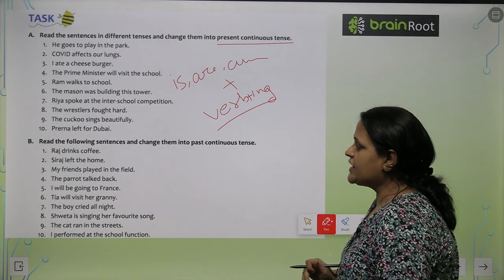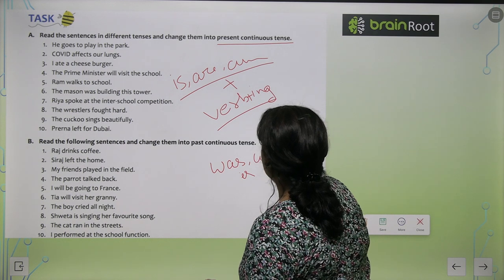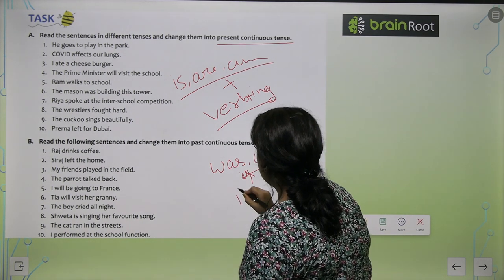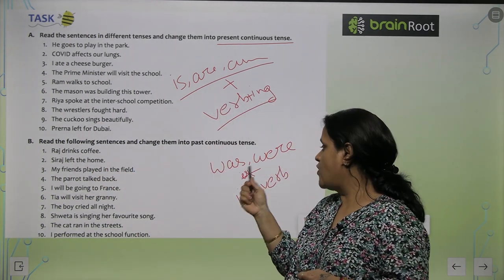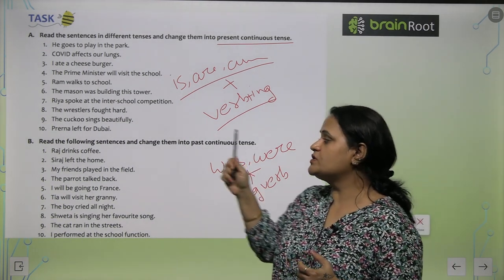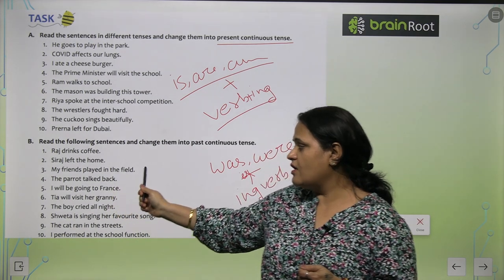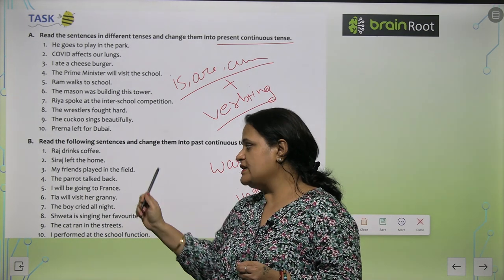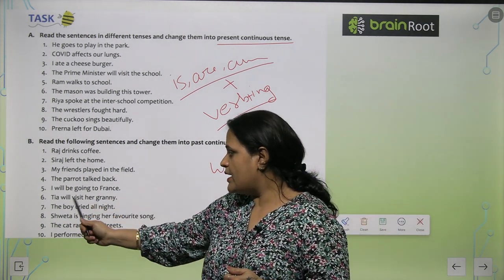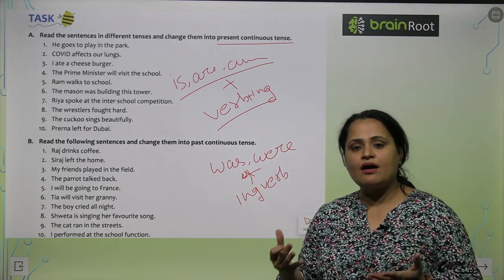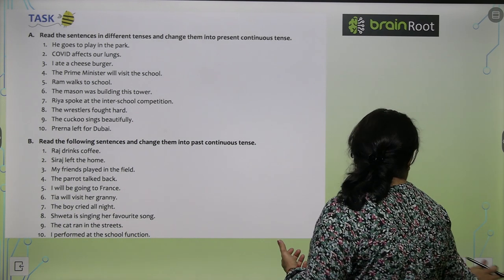Read the following sentences and change them into past continuous tense. Like present continuous, the helping verb in past continuous will be was or were, plus the -ing form of the verb. We use 'was' for a singular noun and 'were' for a plural noun. 'Raj drinks coffee' → 'Raj was drinking coffee.' 'My friends played in the field' → 'My friends were playing in the field.' 'The boy cried all night' → 'The boy was crying all night.' 'The cat ran in the streets' → 'The cat was running in the streets.'